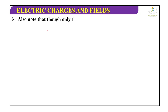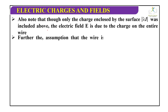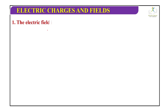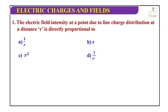Practice question: The electric field intensity at a point due to line charge distribution at a distance r is directly proportional to 1 by r, r, r square, or 1 by r square? The correct answer is 1 by r, since E equals lambda by 2 pi epsilon naught r.